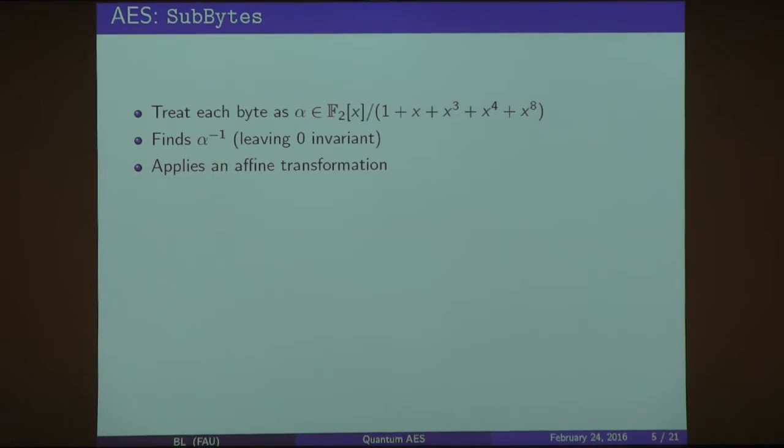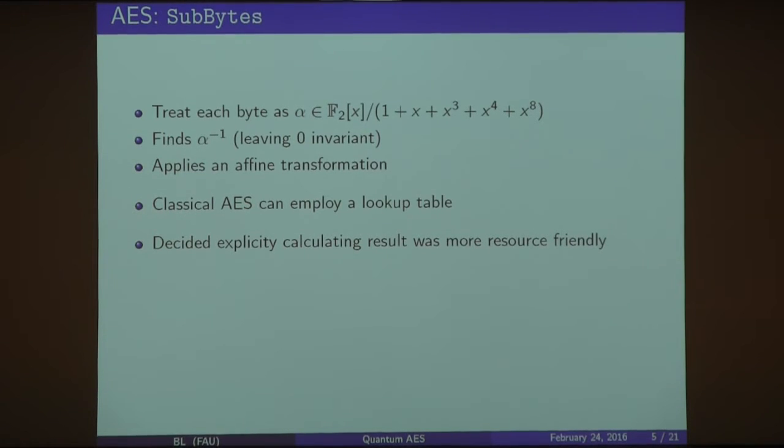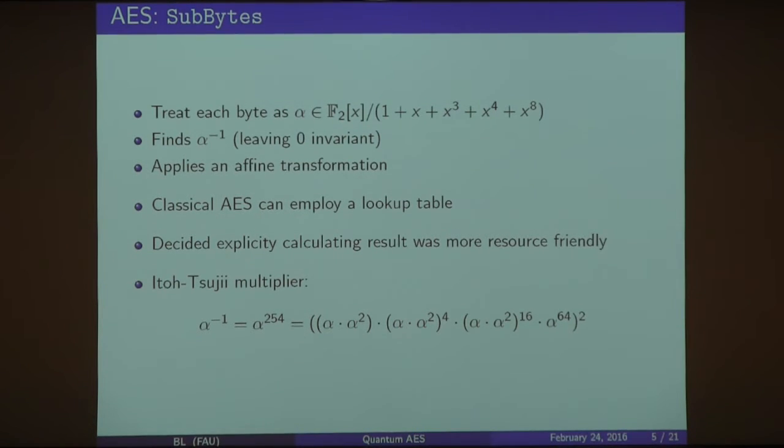What SubBytes actually does is it treats each byte as elements, say alpha, in this finite field, and finds its inverse, and then applies this affine transformation at the very end, which kind of hides the inverse part. Classical AES can employ a lookup table. To do something like this seemed very resource extensive, so what we actually did was explicitly calculate alpha inverse each time. In order to do that, we used Ito Suji inverter. Alpha inverse in this field would be the same as alpha to the 254, so we're applying these calculations here. It's a lot shorter than some square and multiply or some other kind of operation that we currently know of.